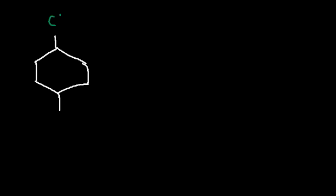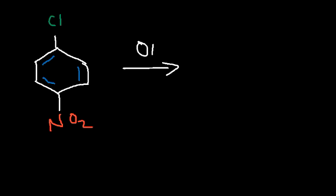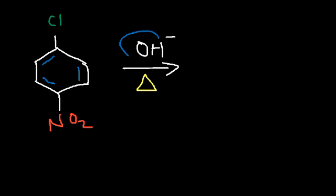Let's start with a very straightforward reaction. We have parachloronitrobenzene, and we're going to react it with a nucleophile — let's use hydroxide. We're going to need heat to speed up the reaction. In a nucleophilic aromatic substitution reaction, the leaving group, the chlorine atom, is going to be replaced with the nucleophile, in this case hydroxide.